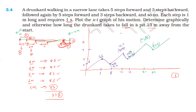Then 5 steps forward from 6 meters: at 29 seconds the position is 11 meters. Then 3 steps backward: at 32 seconds the position is 8 meters. Then 5 steps forward from 8 meters: at 37 seconds the distance reaches 13 meters. Therefore the drunkard falls into the pit at 37 seconds.